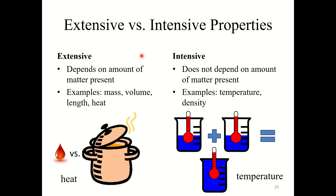Now let's look at extensive versus intensive properties. Extensive properties depend on the amount of matter present. Examples include mass, volume, length, and heat — all four depend on the amount of matter present. For example, with mass, the more of something you have, the greater the mass. So this is an extensive property.